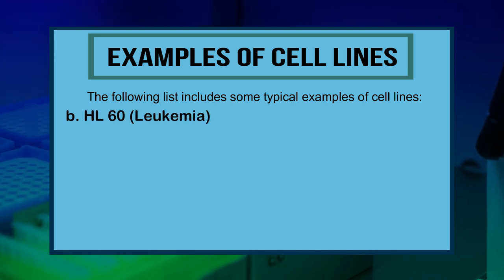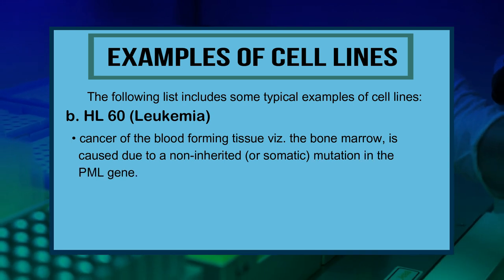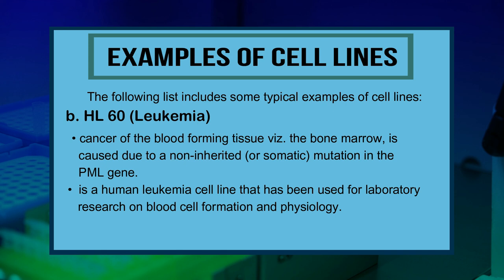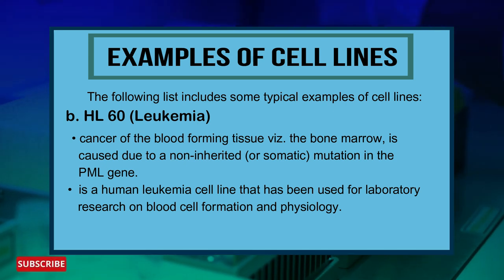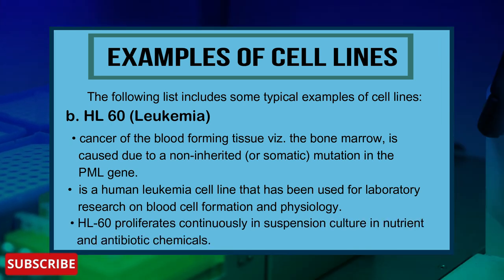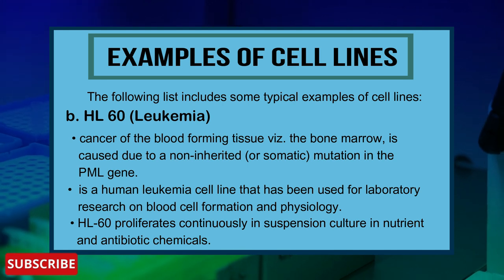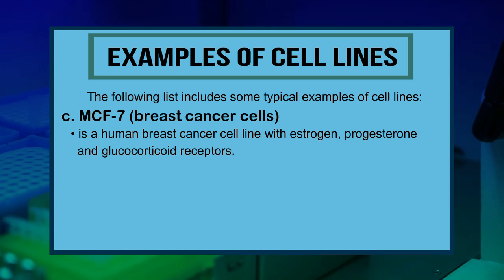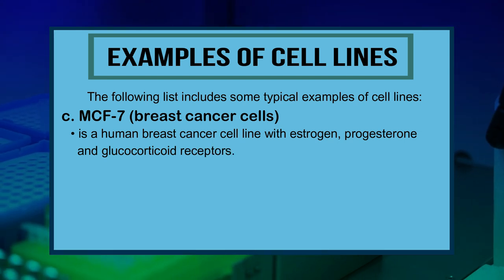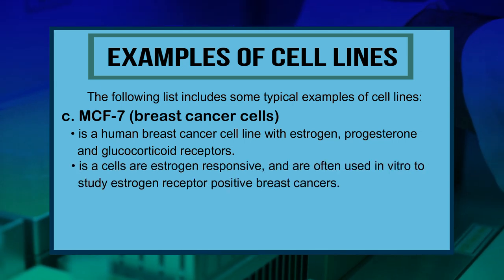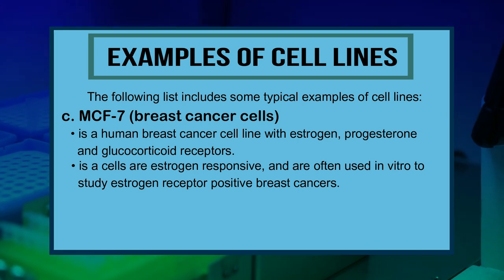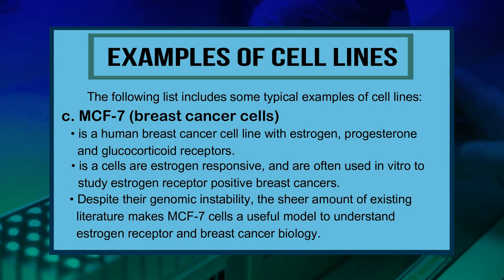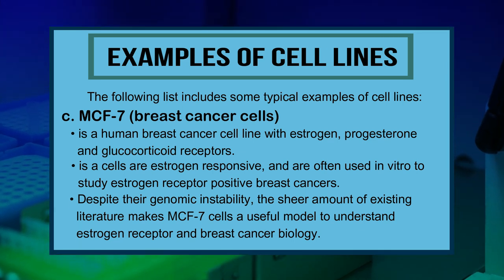HL60 is a cancer of the blood-forming tissue (bone marrow) caused by a non-inherited mutation in the PML gene. The HL60 cell line is a human leukemia cell line used for laboratory research on blood cell formation and physiology, and it proliferates continuously in suspension culture in nutrient and antibiotic chemicals. MCF7 is a human breast cancer cell line with estrogen, progesterone, and glucocorticoid receptors. These cell lines are estrogen-responsive and are often used in vitro to study estrogen receptor-positive breast cancers.